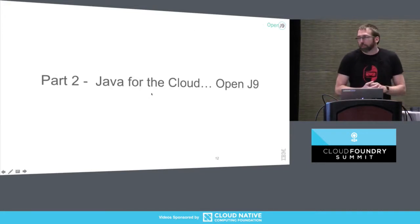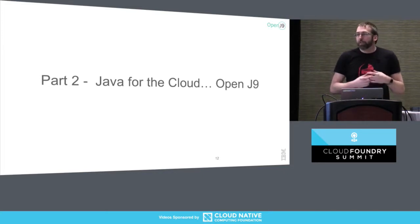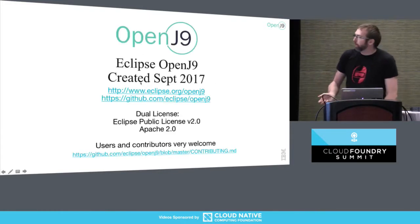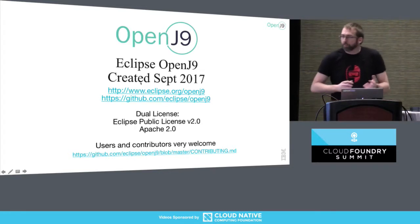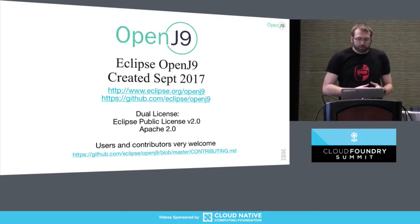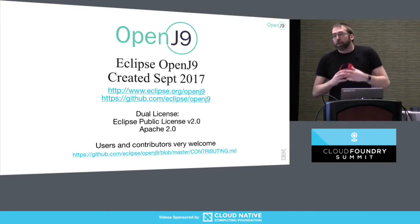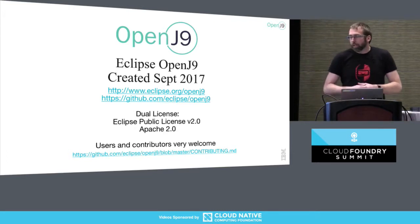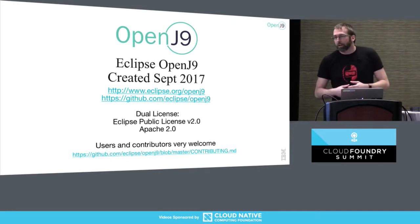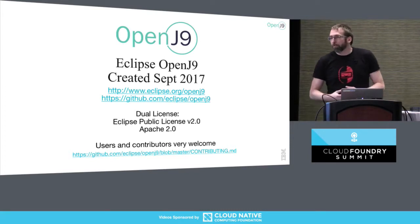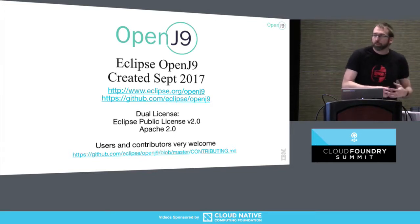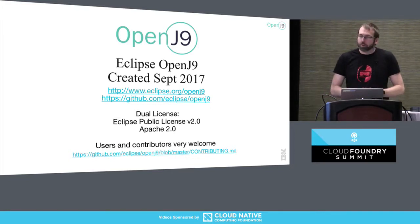Part two: Java for the cloud. The VM itself should actually be able to help out a lot here with improving your ability to run, save money, and have a better environment in the cloud. OpenJ9 is another version of a Java virtual machine. It was open-sourced in September 2017, but it's not a new VM — this has actually been IBM's Java virtual machine since the 90s. It's just now been open-sourced, partly to be more involved with open-source communities.